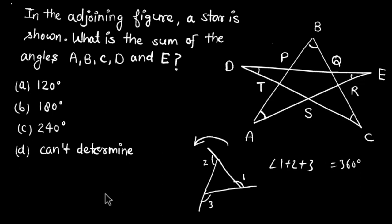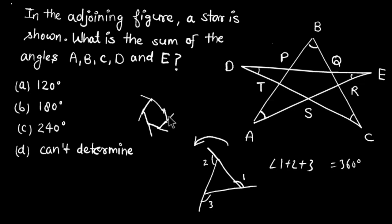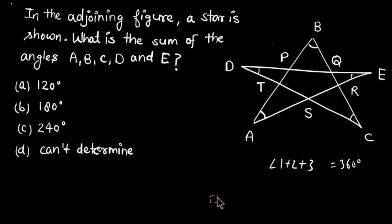So the sum of external angles of any polygon is 360 degrees — it doesn't matter what polygon it is, whether a hexagon, octagon, or any other shape. For a hexagon, all six external angles drawn in the anti-clockwise direction also sum to 360 degrees. This property applies to any polygon.